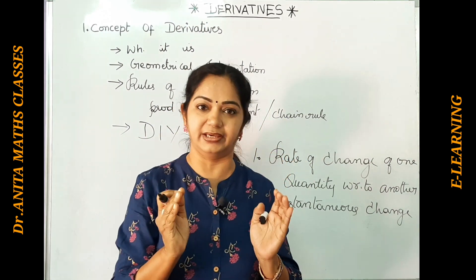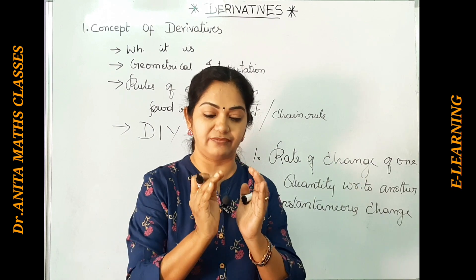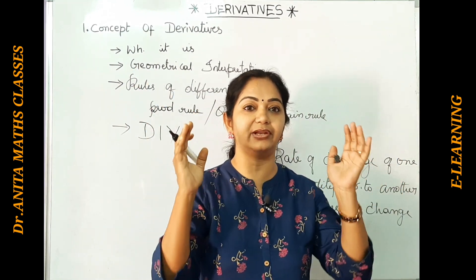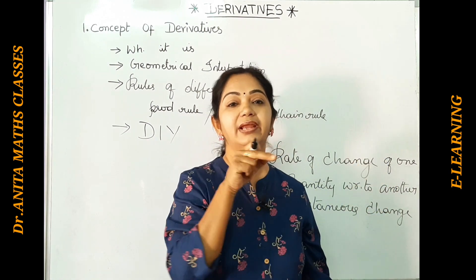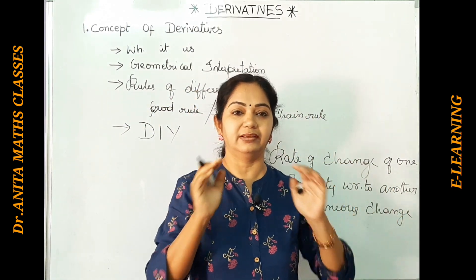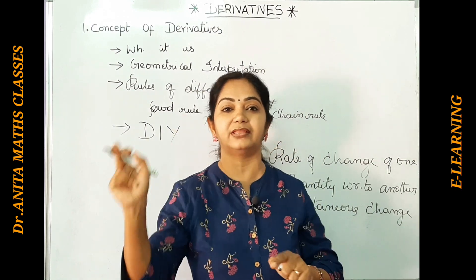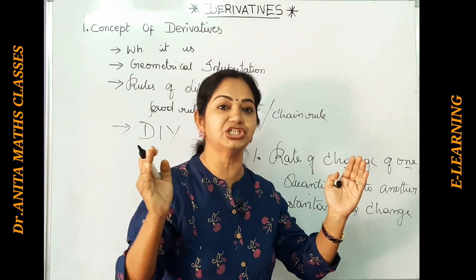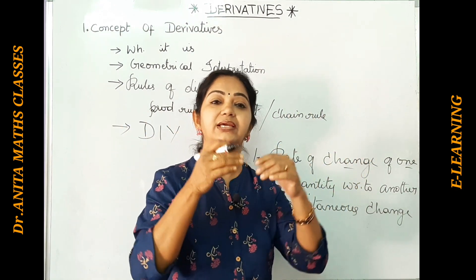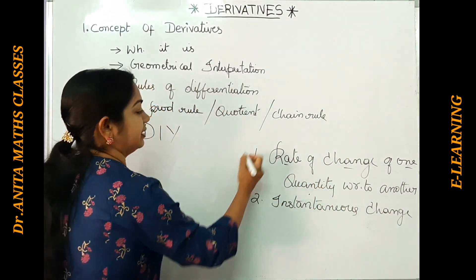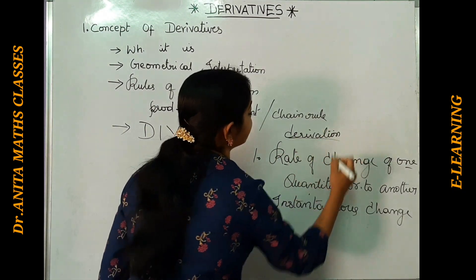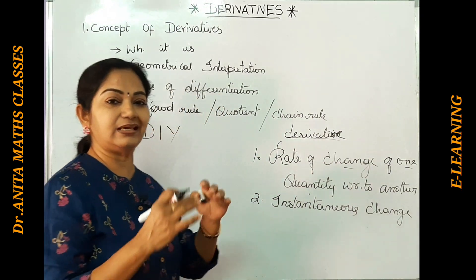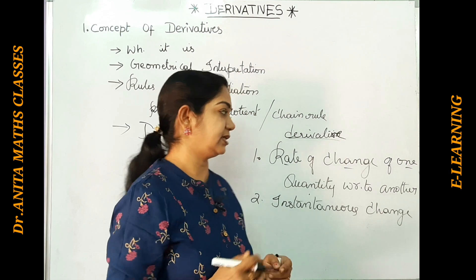To clearly understand the derivative, here's an example. If I take a circle of a particular radius and increase or decrease that radius, the area of the resultant circle with respect to the radius — that is a rate of change of one quantity with respect to another. We are seeing the change in area with respect to radius, and that is nothing but the derivative. Differentiation is the process of finding that derivative.